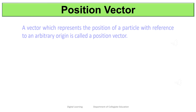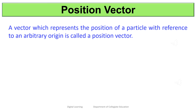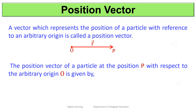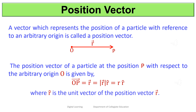A vector which represents the position of a particle with reference to an arbitrary origin is called a position vector. The position vector of a particle at position P with respect to the arbitrary origin O is given by vector OP = vector r = r · r̂, where r̂ is the unit vector of the position vector r.